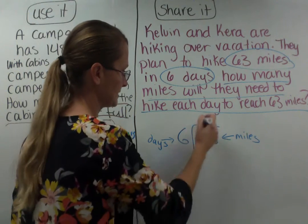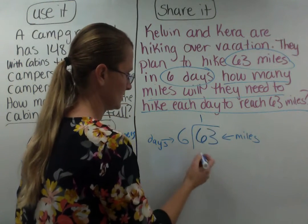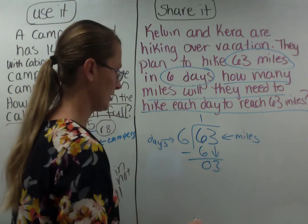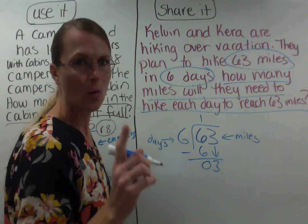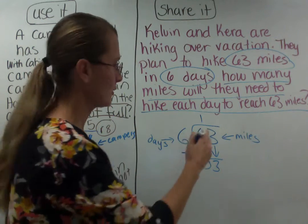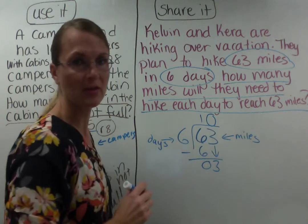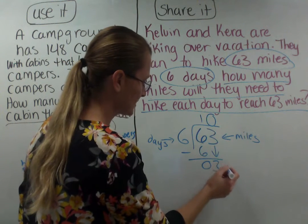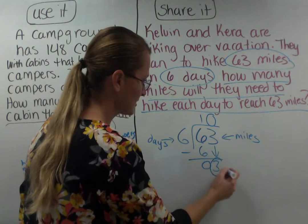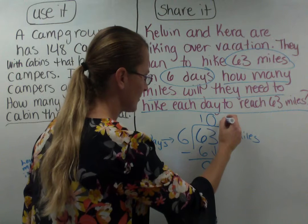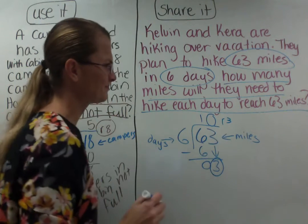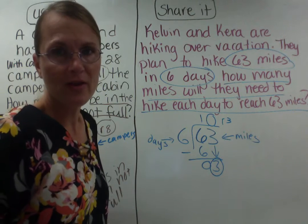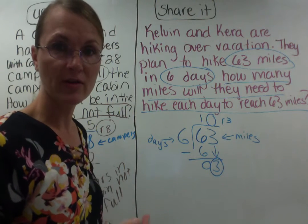Six goes into 6 one time, with zero left over. Bring down the 3. Six will not go into 3, so I have to put a placeholder — it's not going to fit. I don't have any other numbers to bring down, which makes that 3 my remainder. But wait — they can't have 10 remainder 3 miles. If they have 3 miles left over, then they haven't hiked the whole 63.